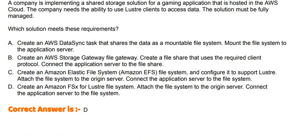Option A: Create an AWS DataSync task that shares the data as a mountable file system; mount the file system to the application server. Option B: Create an AWS Storage Gateway file gateway; create a file share that uses the required client protocol and connect the application server to the file share. Option C: Create an Amazon Elastic File System and configure it to support Lustre; attach the file system to the origin server and connect the application server to the file system. Option D: Create an Amazon FSx for Lustre file system; attach the file system to the origin server and connect the application server to the file system.